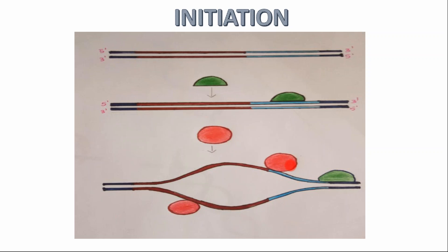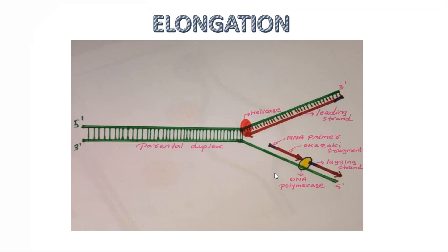After binding to that region, these proteins recruit other proteins to come and bind as well. These other proteins help the DNA molecule get its strands separated, as you can see here. These proteins are known as helicase. Helicase unwinds the two strands because these strands will guide the synthesis of new strands.